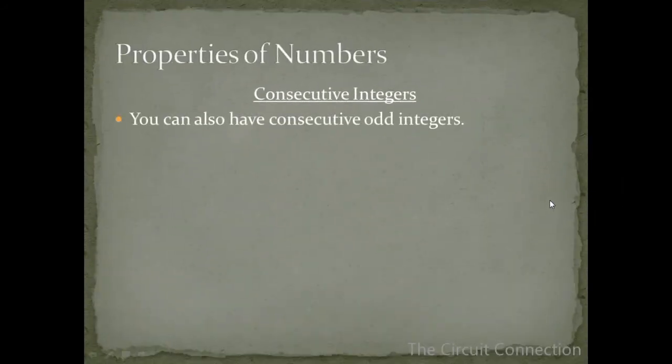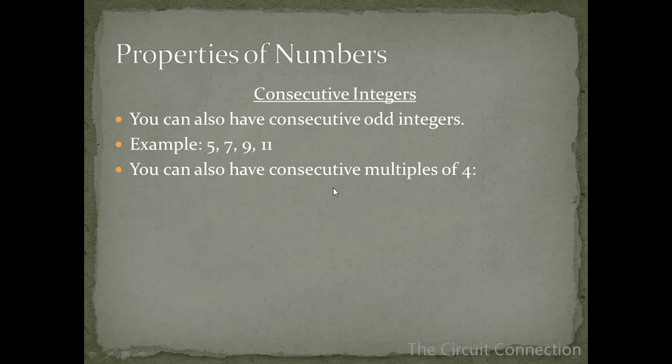So you can also have consecutive odd integers, example 5, 7, 9, and 11. You can also have consecutive multiples of 4: 4, 8, 12, and 16. So we've specified multiples of 4 so our interval in between here from 4 to 8 is 4, from 8 to 12 is 4, from 12 to 16 is 4.